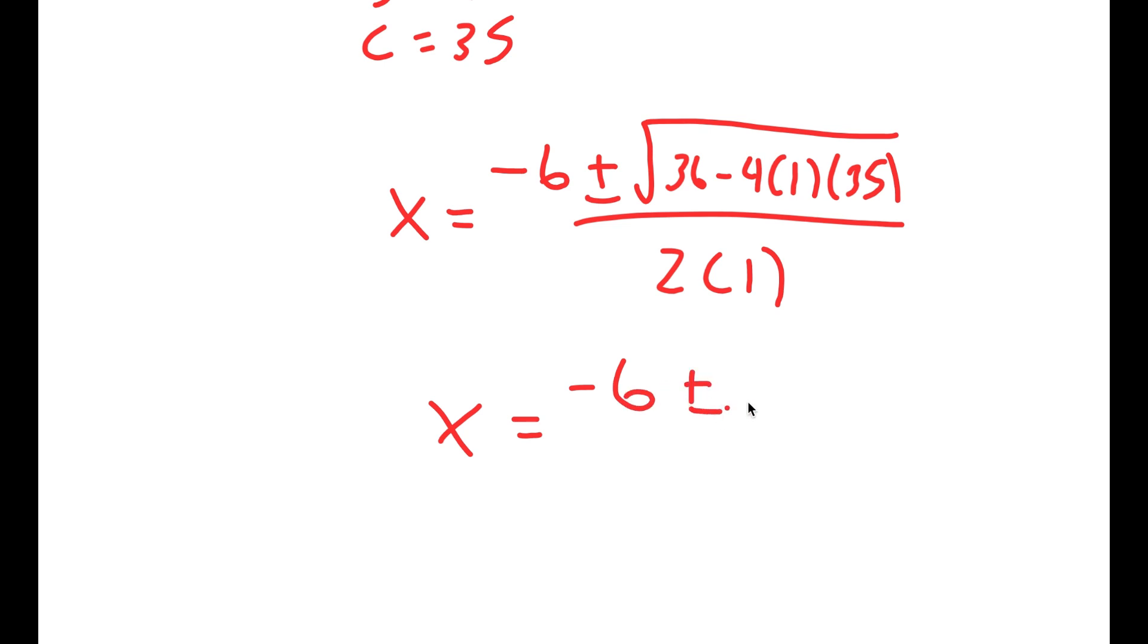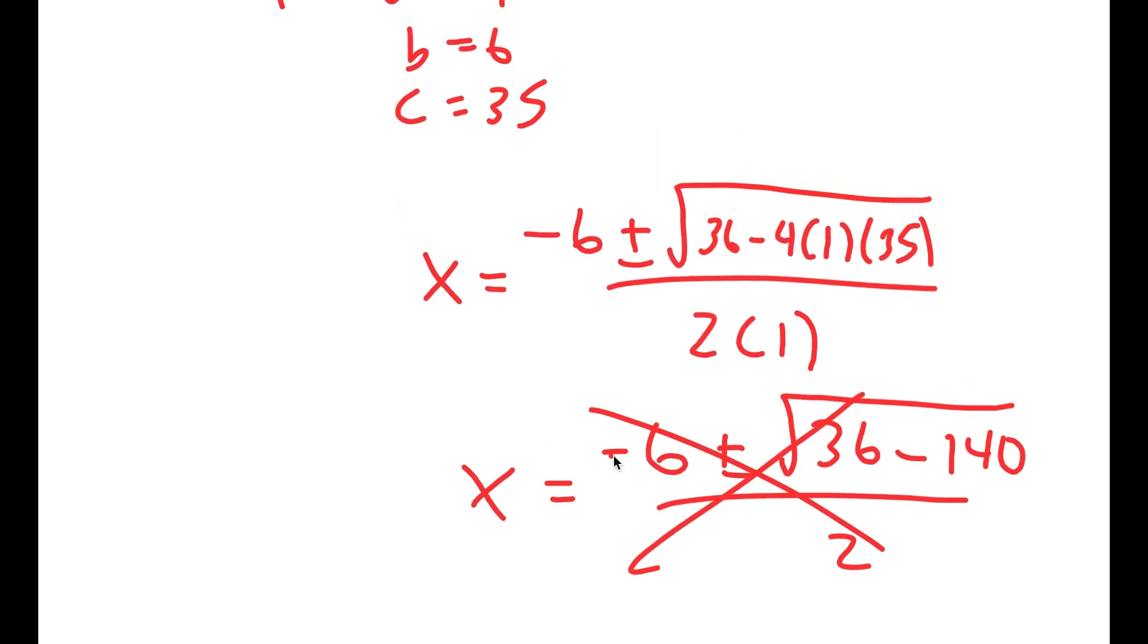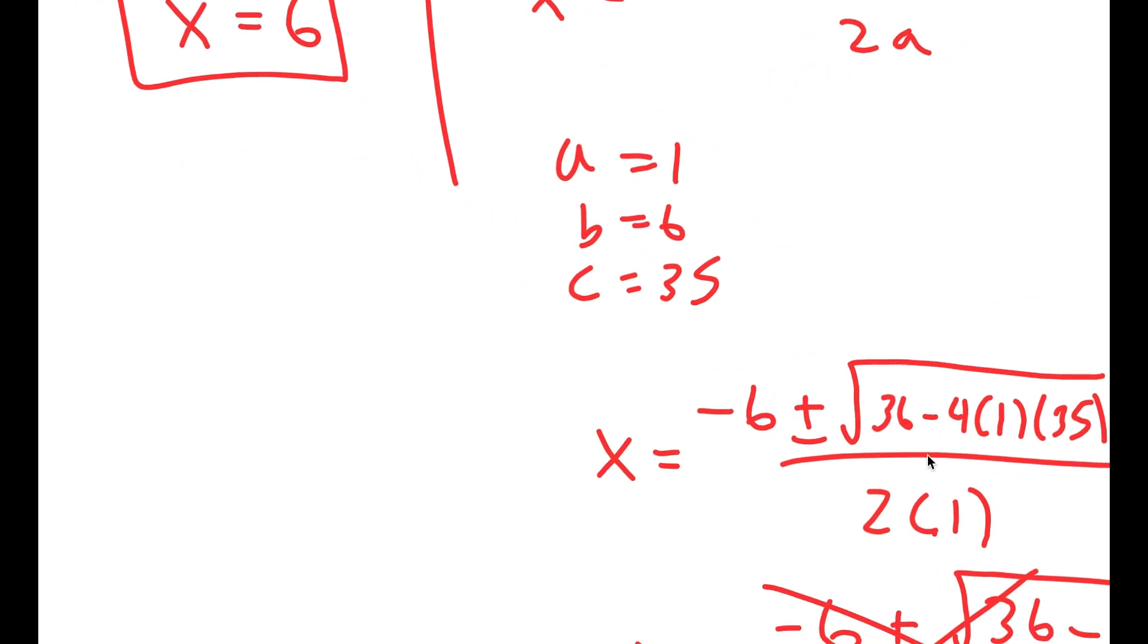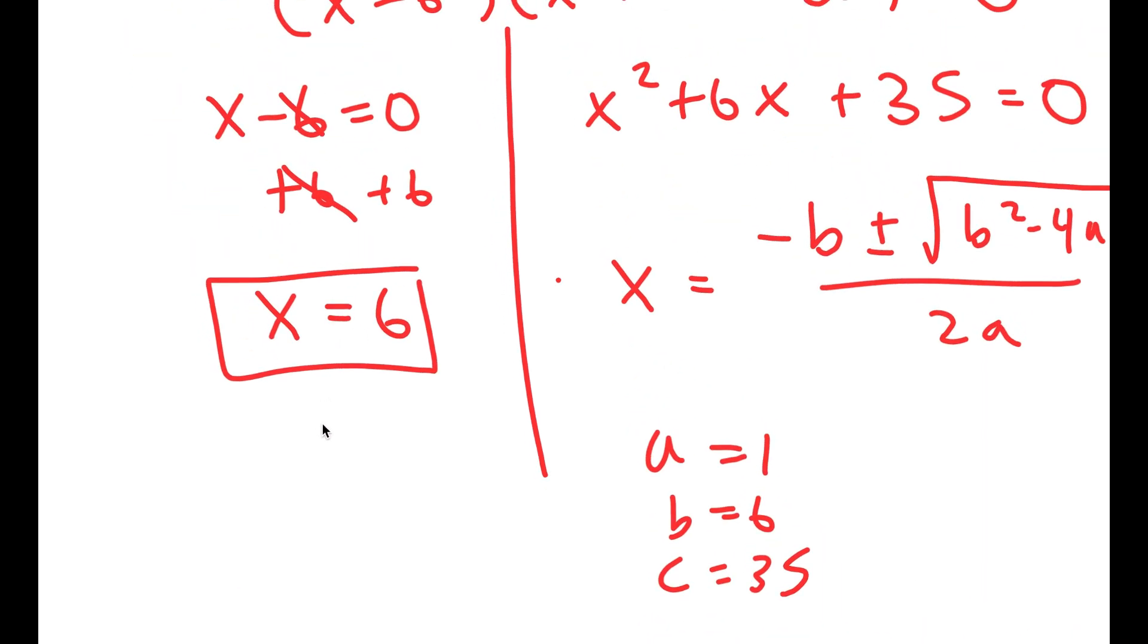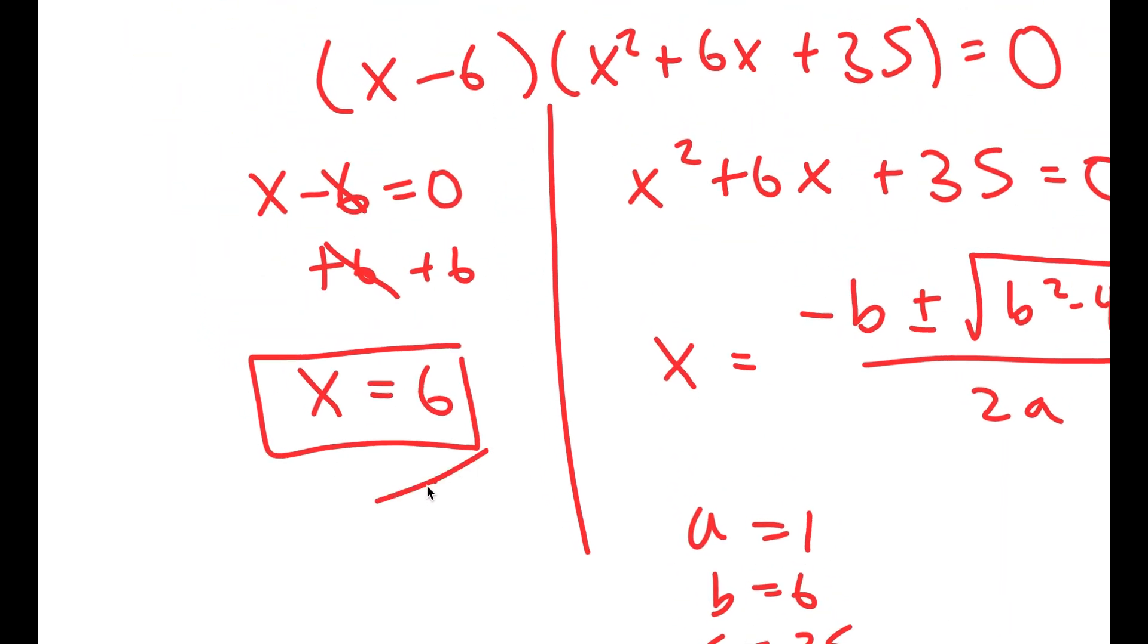And this is equal to negative 6 plus or minus the square root of 36 minus 140. And 36 minus 140, well, that's going to be a negative number. And you can't take the square root of a negative number. So meaning there's no real solutions to this. There are imaginary solutions, but there are no real solutions with this. So x equals 6 is our only real solution to this equation.